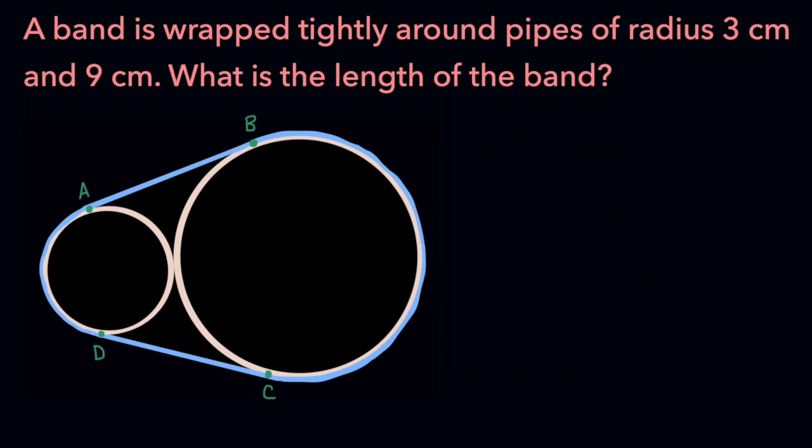By drawing these points, we've effectively split up the length of the band into four different parts. We have the line segment AB, the arc BC, then the line segment CD, and the arc DA.